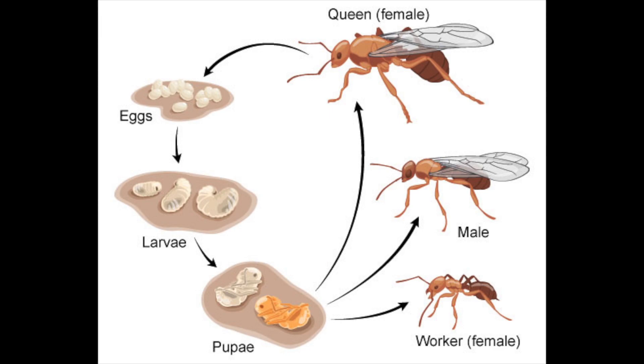Fertilized eggs produce female ants — queens, workers, or soldiers. Unfertilized eggs produce male ants.